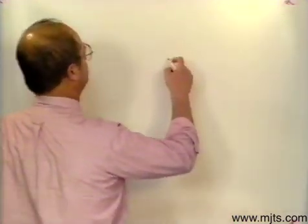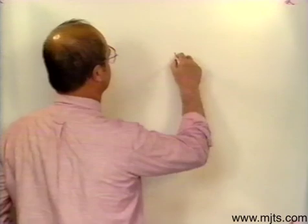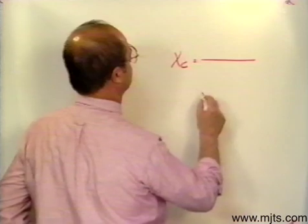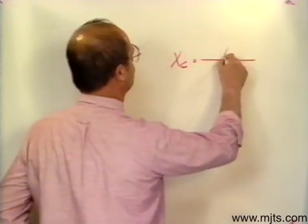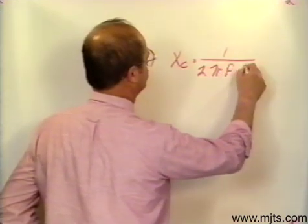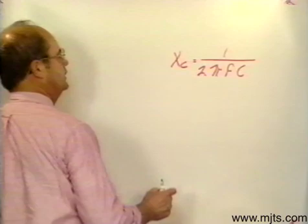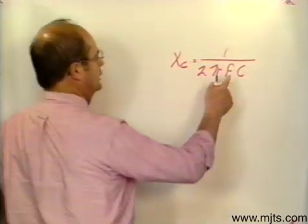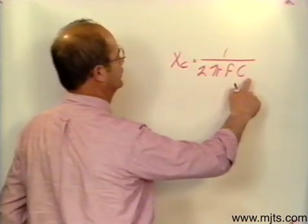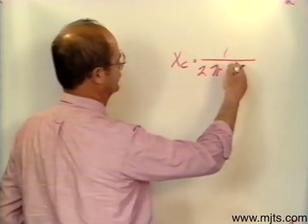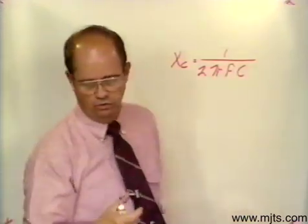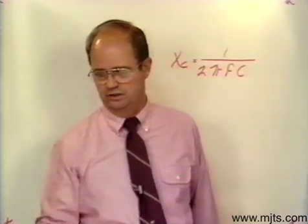Capacitive reactance in our formula would look like this. It's the reciprocal of our inductive reactance. In other words, it's one over two pi fc. In this case, our unit of measure of capacitance is farads. If it's given to you in any other prefix other than the whole unit, then you'd have to change that.